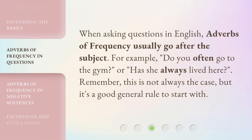When asking questions in English, adverbs of frequency usually go after the subject. For example, 'Do you often go to the gym?' or 'Has she always lived here?' Remember, this is not always the case, but it's a good general rule to start with.